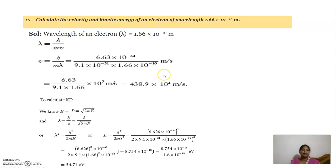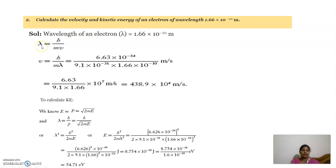Next problem: calculate the velocity and kinetic energy of the electron of wavelength 1.66 into 10 power minus 10 meters. We need to calculate the velocity and the kinetic energy. The given data is the wavelength of the electron 1.66 into 10 power minus 10 meters. To find the velocity, the de Broglie wavelength equation is lambda equal to h by mv.